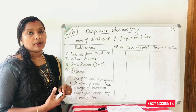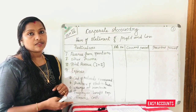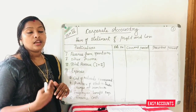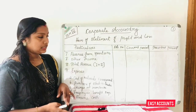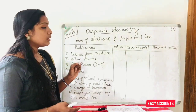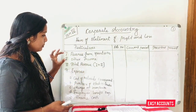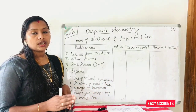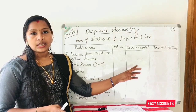The second heading is other income. Other income includes interest received, discount, and commission not related to core business operations. Revenue from operations plus other income gives the total revenue.